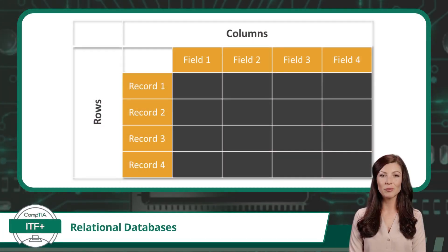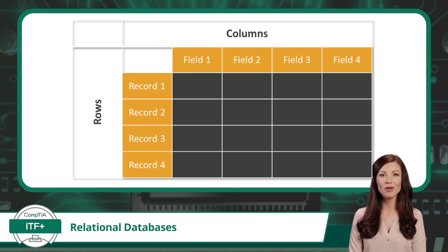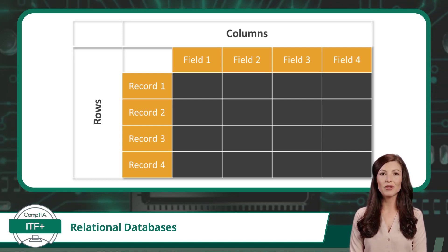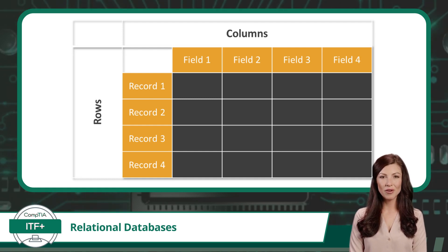A relational database is a structured data system that stores information in tables. A table is comprised of data values stored in a series of columns and rows, where columns align data values vertically and rows align data values horizontally. Using this table structure, each row represents a separate record and each column represents a single field or attribute within a record.